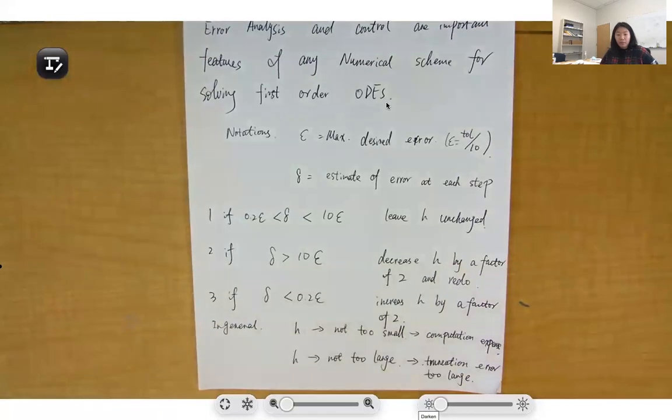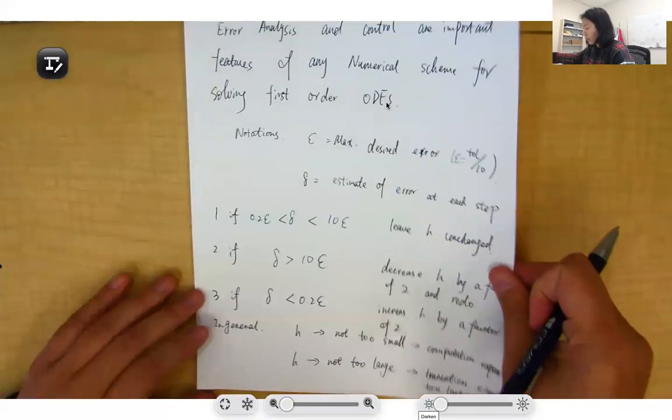We will use two examples to see how you can calculate the errors based on different methods: based on different step sizes or different orders of Runge-Kutta. We can see how programs such as MATLAB do this kind of error analysis and control.